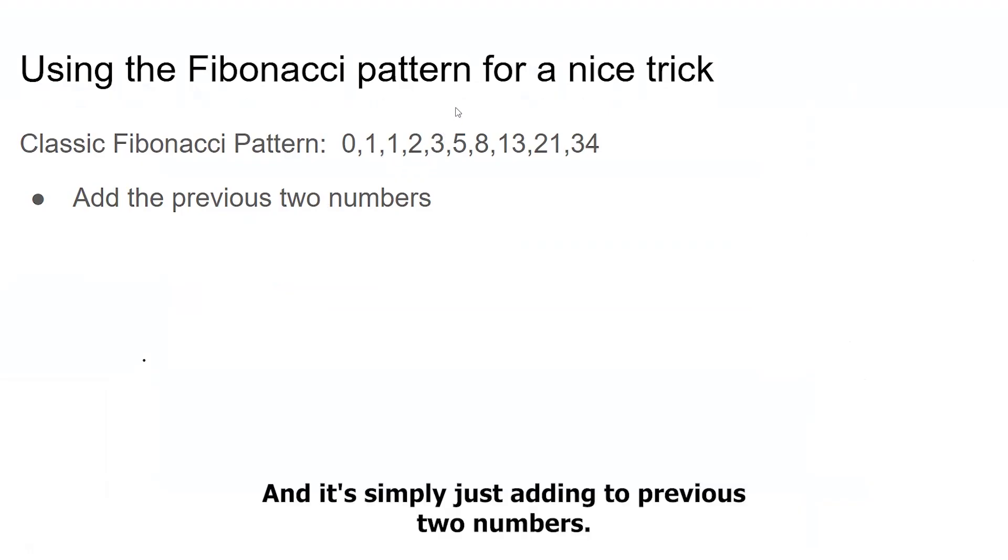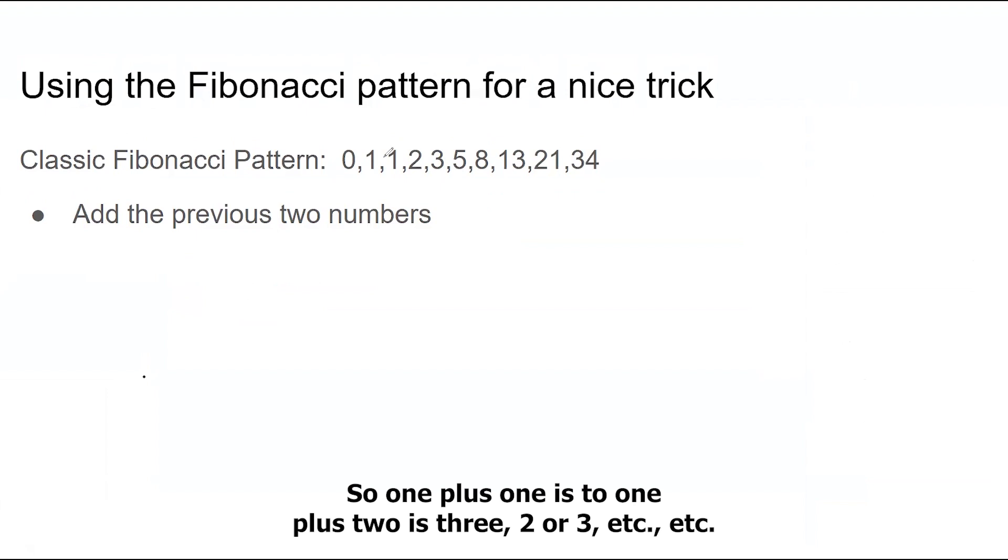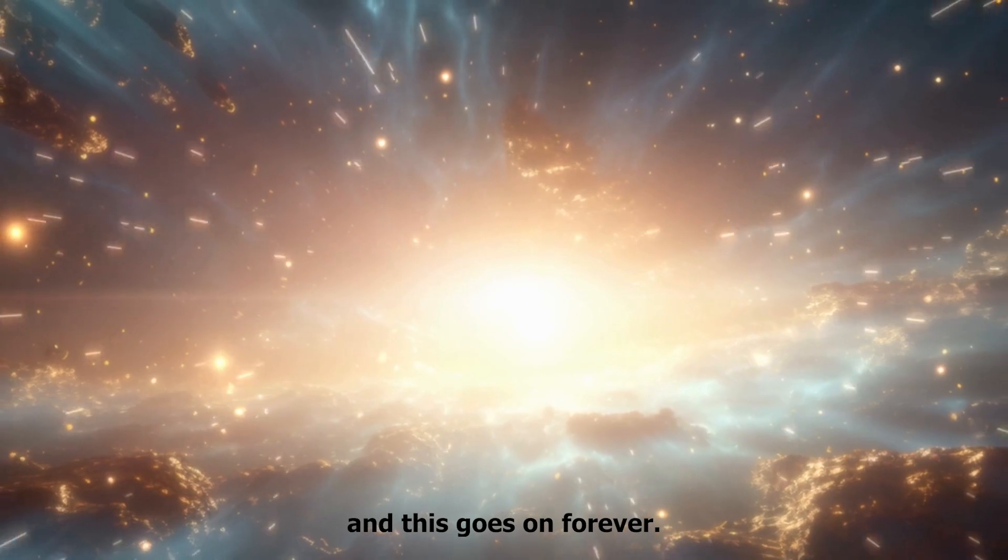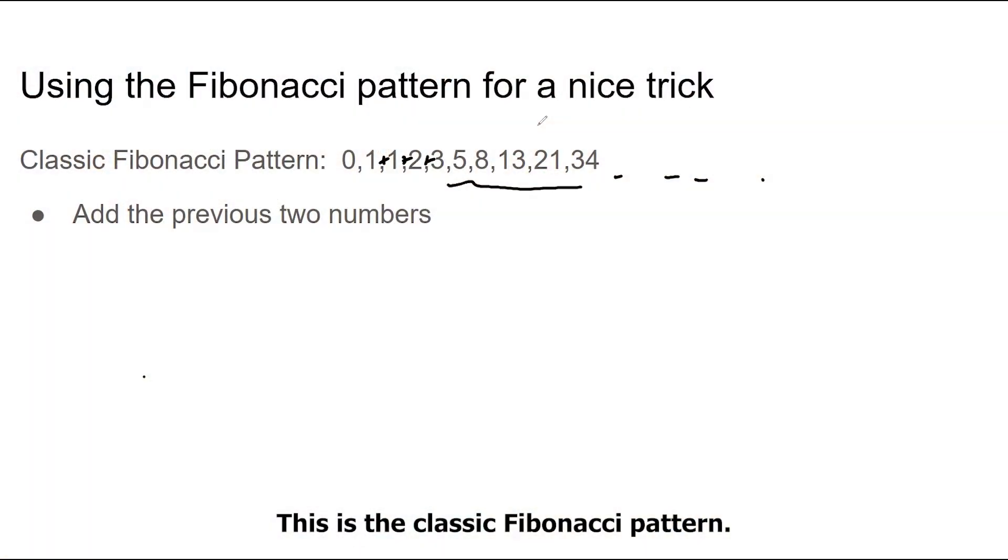And it's simply just adding the previous two numbers. So 1 plus 1 is 2, 1 plus 2 is 3, 2 plus 3 is 4, et cetera. And this goes on forever. This is the classic Fibonacci pattern, but you can do Fibonacci with any numbers you have.